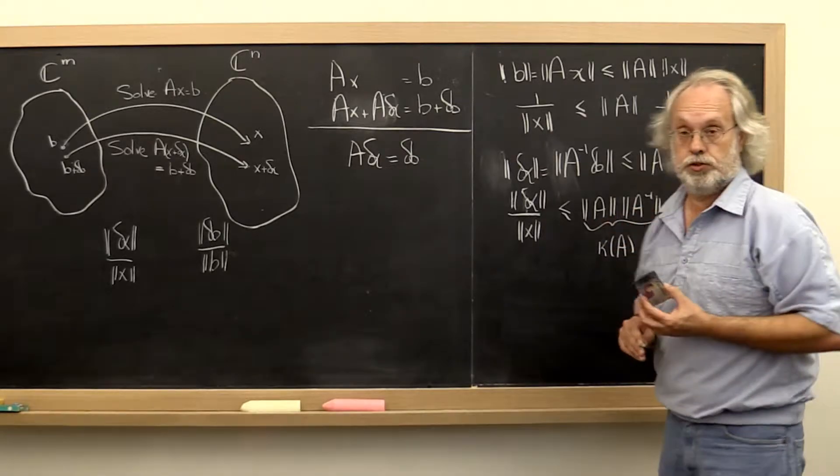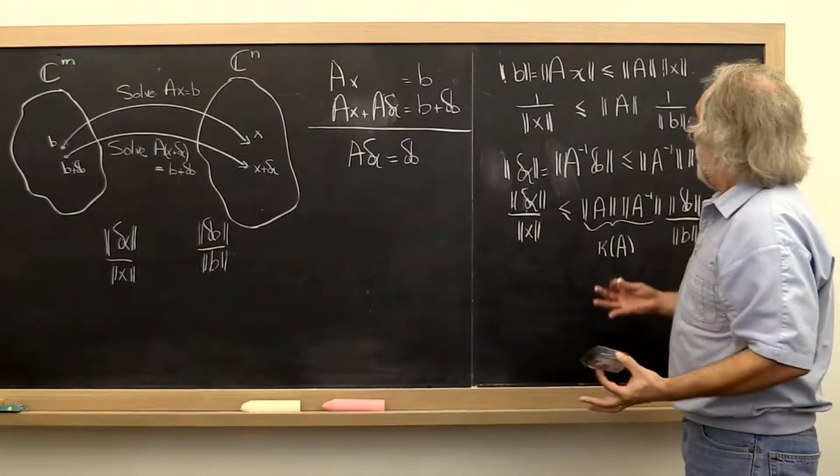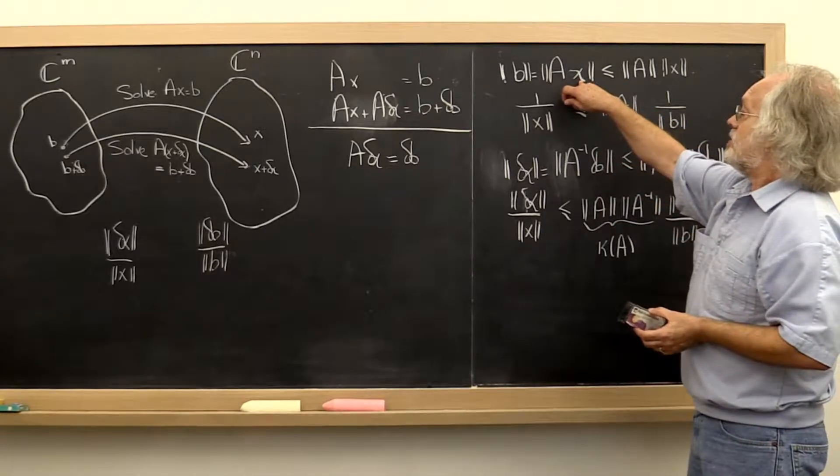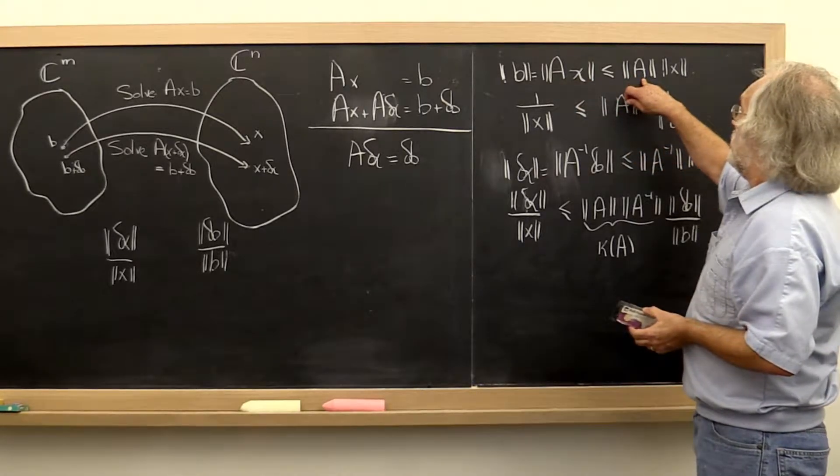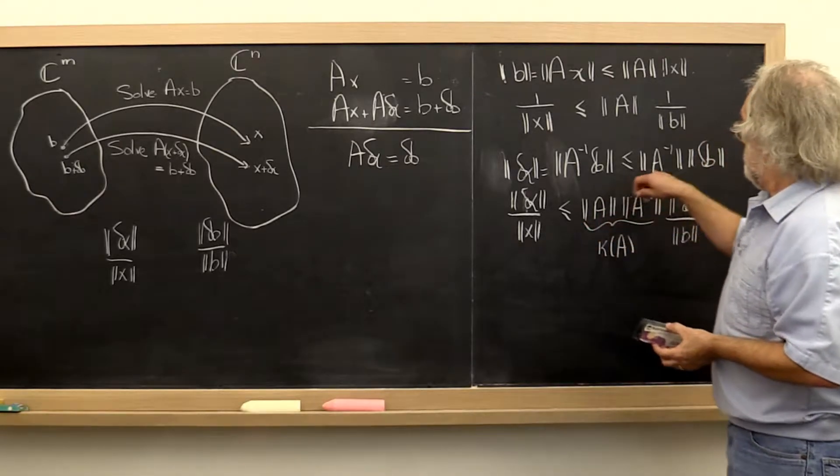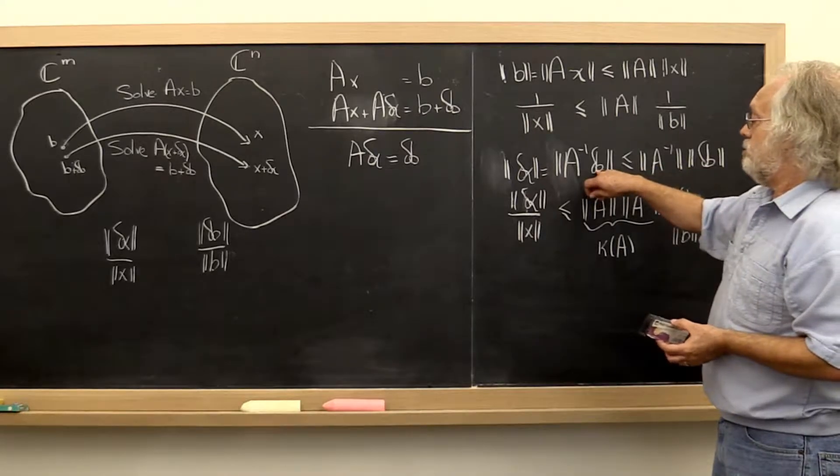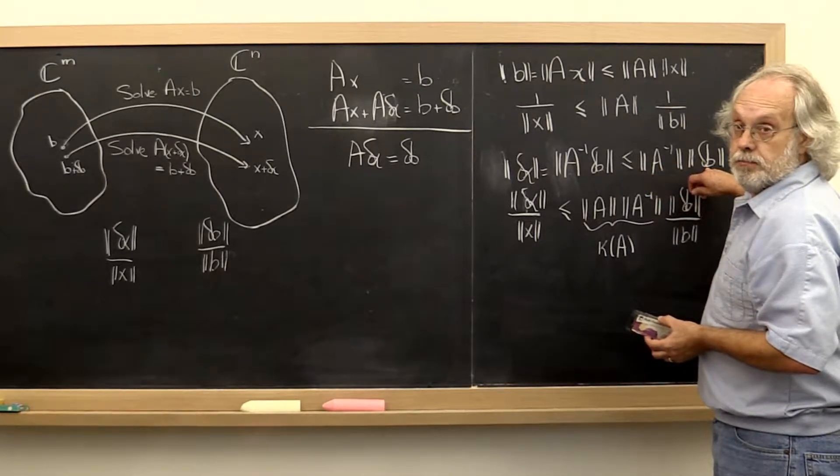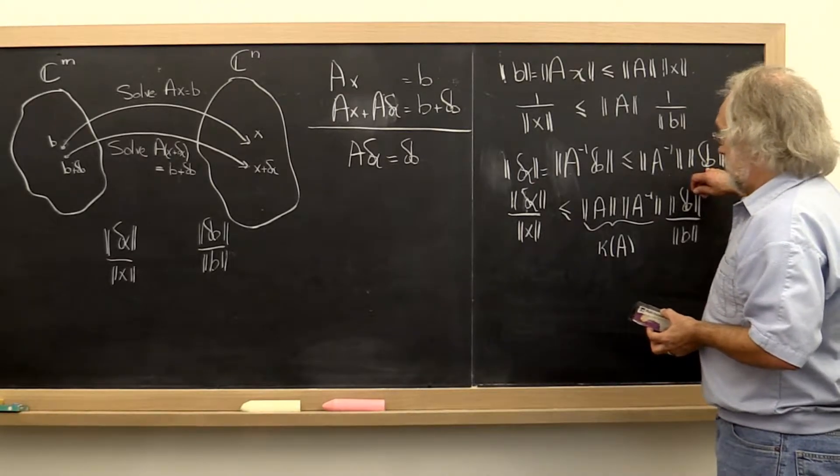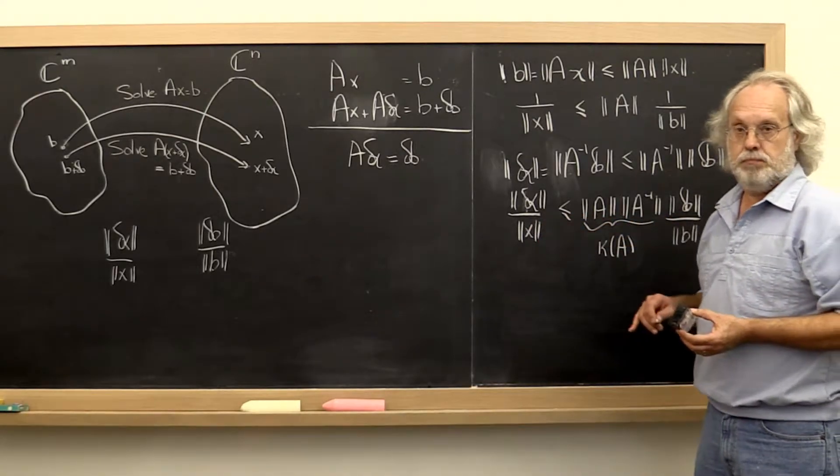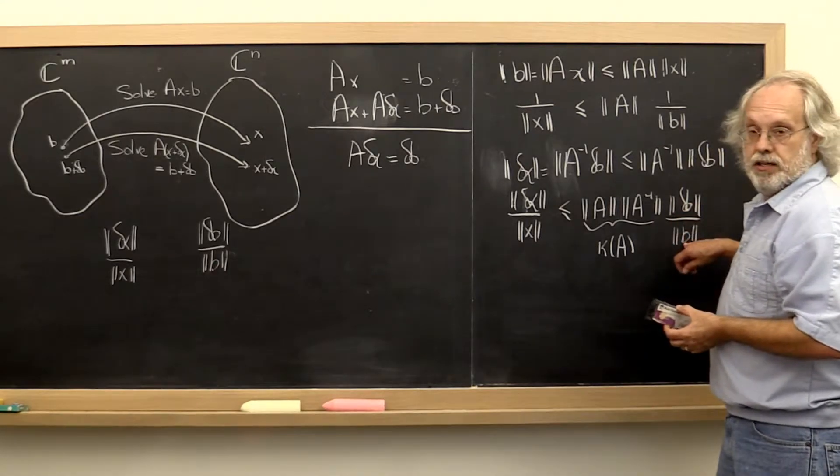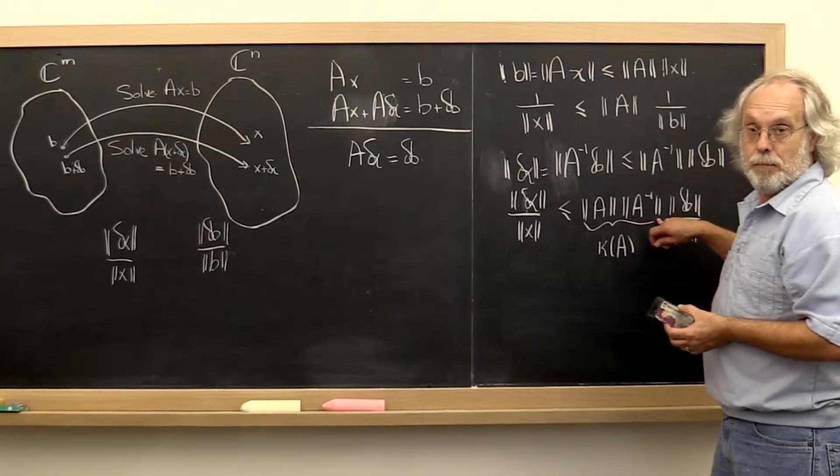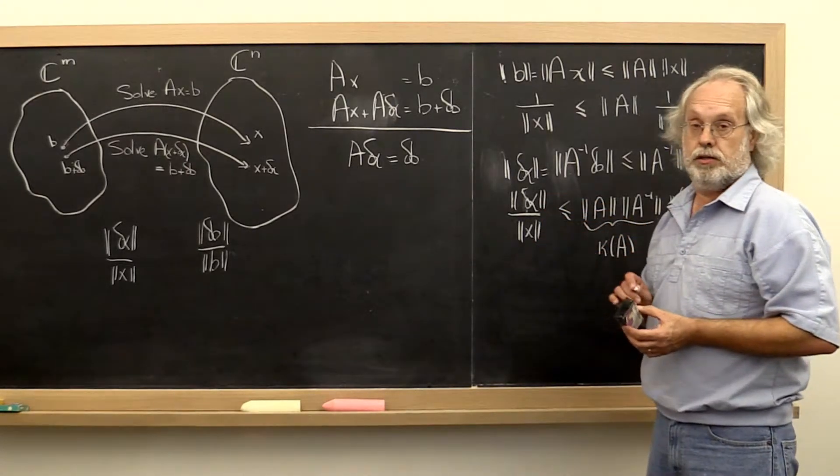Obviously this condition number depends on which norm you chose. When we talked about induced matrix norms, we saw that there is a vector x such that the norm of A times x equals the norm of A times the norm of x, and similarly there is a choice for delta B such that A inverse times delta B in norm equals the norm of A inverse times the norm of delta B. What does that mean? That means this is a tight bound. There are choices for delta B and B such that the relative error is actually amplified exactly by the condition number of A into the relative error in x.